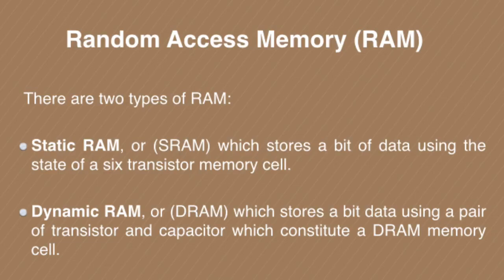Static RAM stores a bit of data using the state of a six-transistor memory cell, so it is constructed with the help of transistors. On the other hand, Dynamic RAM also stores a bit of data, but it is constructed with the help of one transistor and one capacitor.